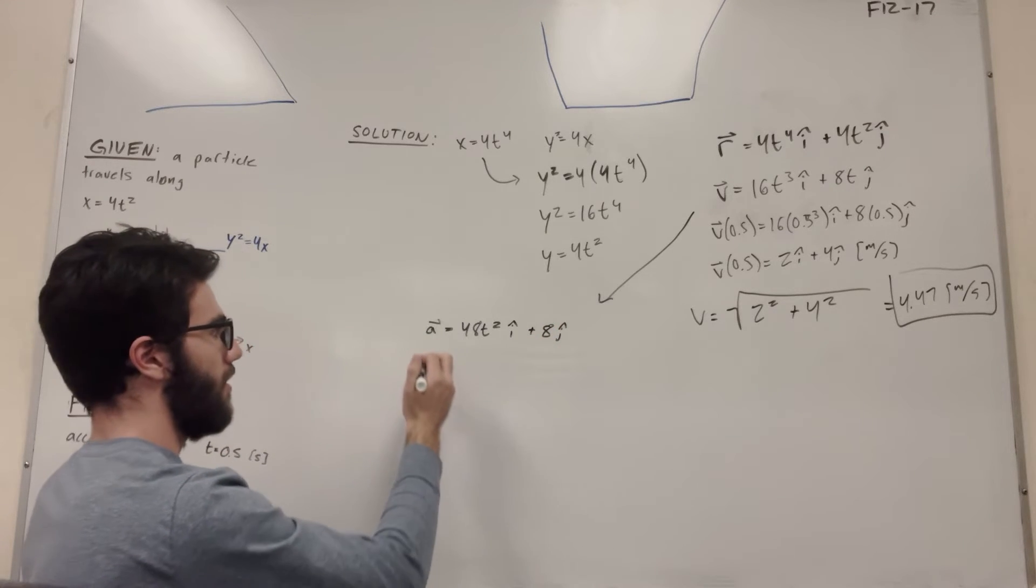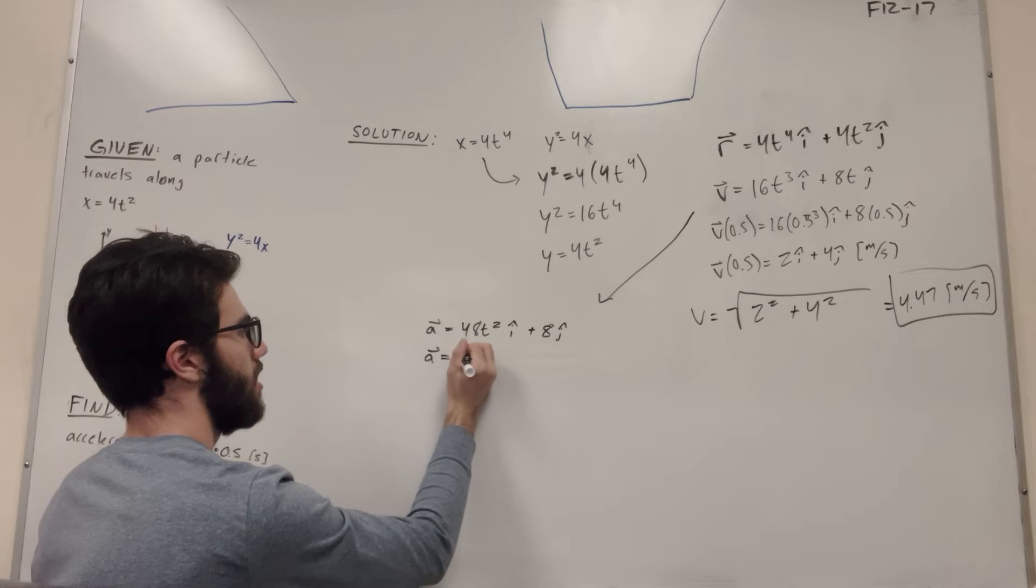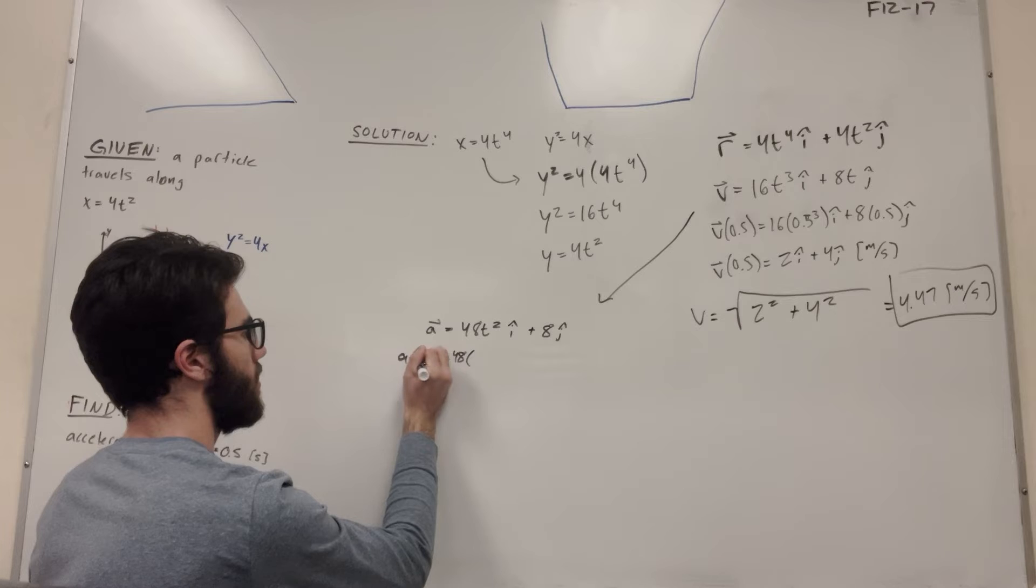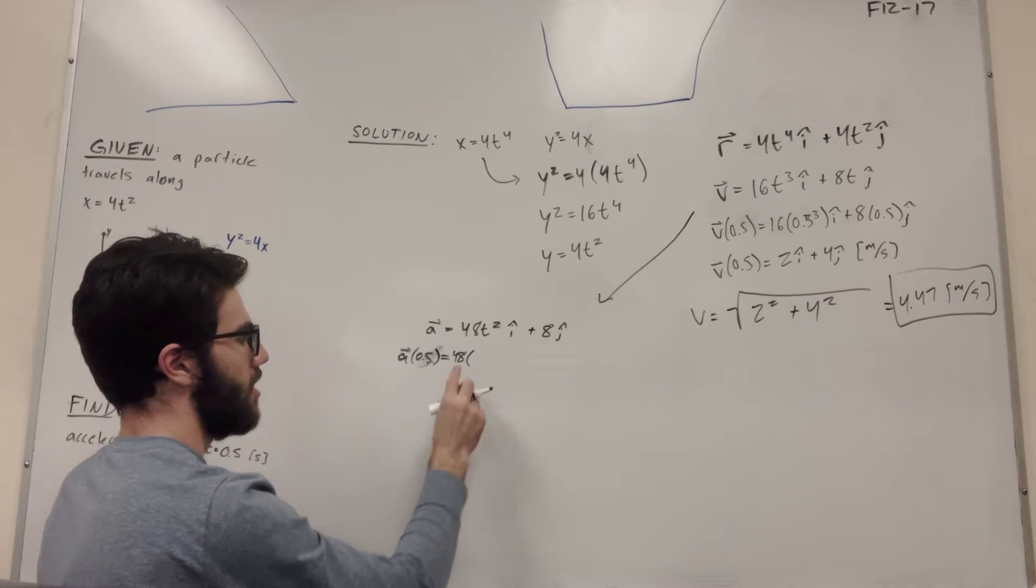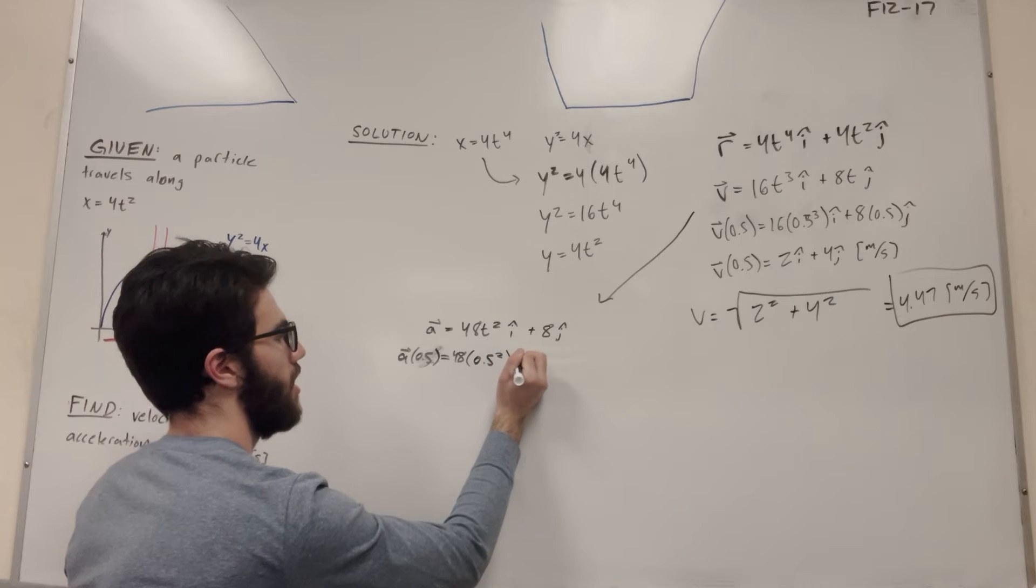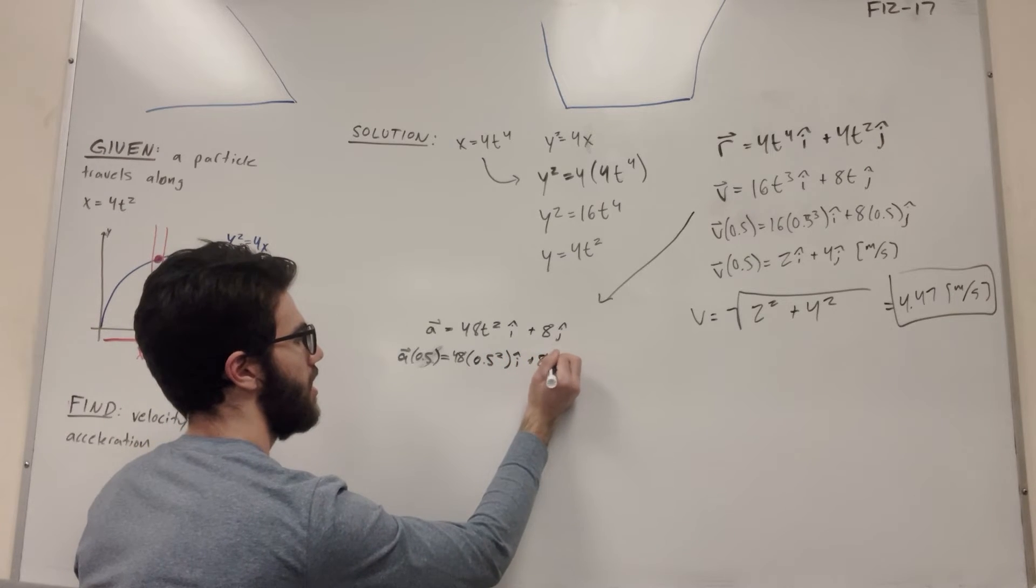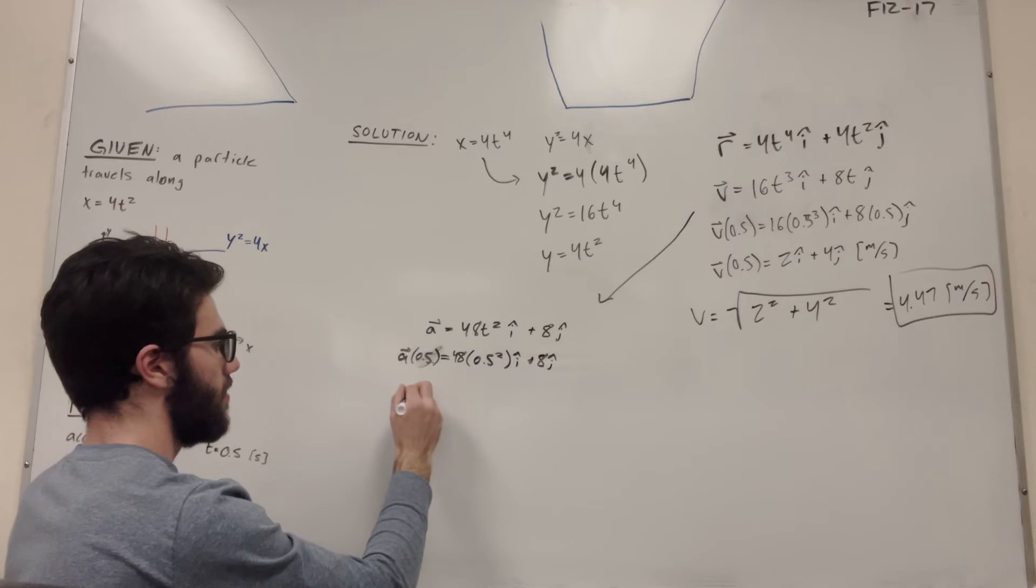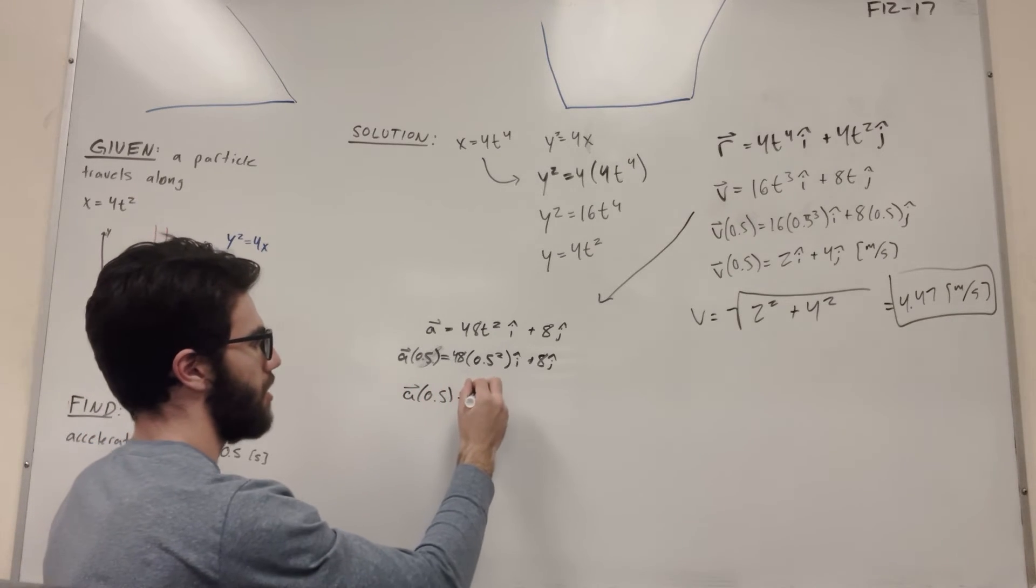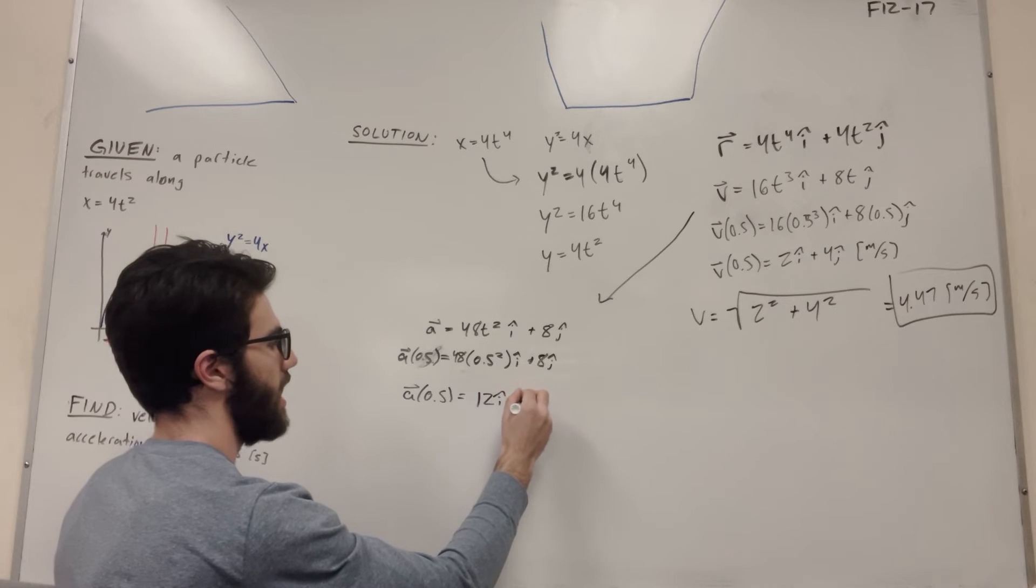So then let's plug in one half again. So it's going to be 48, let's do a at 0.5. So we're going to plug in one half. So this is going to become 0.5 squared i plus 8j. This is going to become a fourth. So 48 divided by 4 is equal to 12i plus 8j.